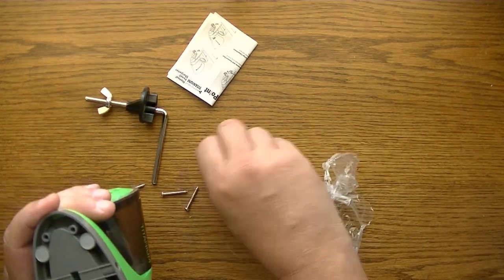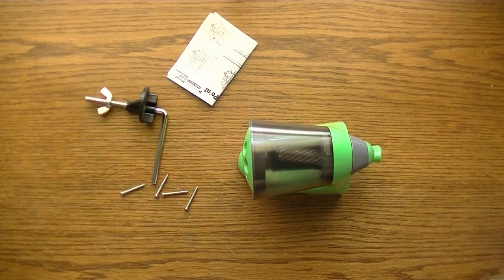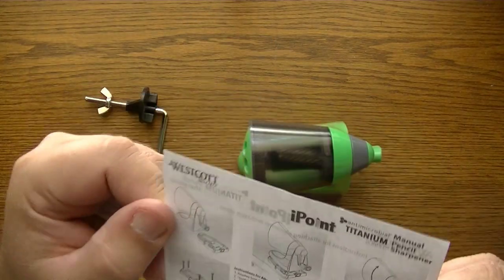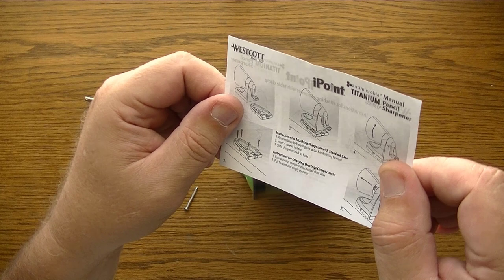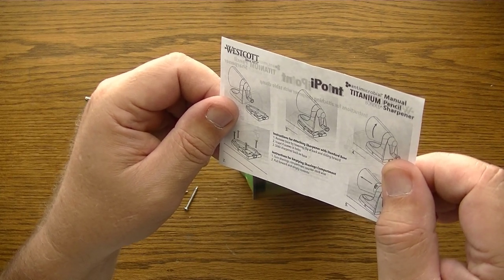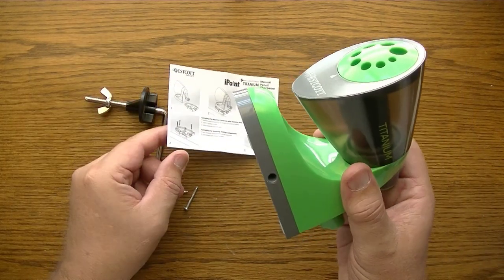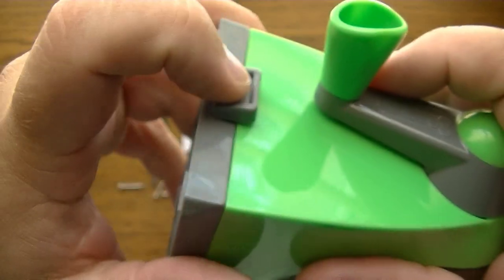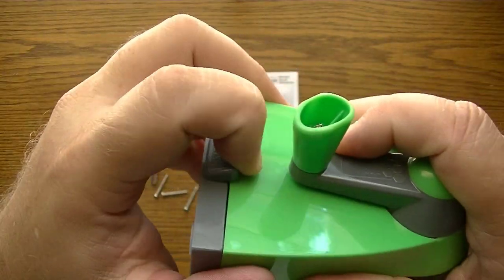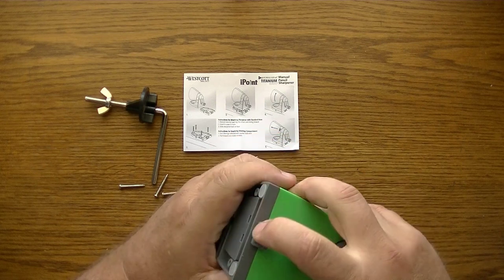Apparently I just don't like reading instructions. According to the instructions, it says remove the base by lowering clip at back and sliding forward, insert four screws in holes, slide sharpener... So it's telling me that this thing has a base plate. It says push. So you push - how do you push? Push this way? How about if I push this way?